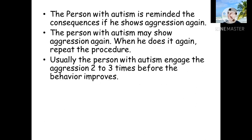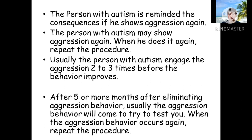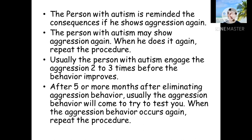Usually the person with autism engages in aggression two to three times before the behavior improves. After five or more months of eliminating aggression, the behavior may come back to test you. When that happens, the procedure must be repeated, because the child will try to test you — but don't worry, the child will get better.